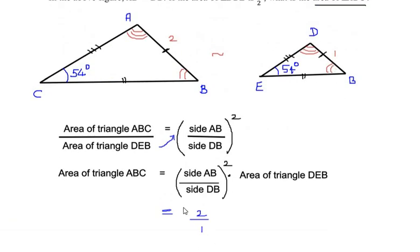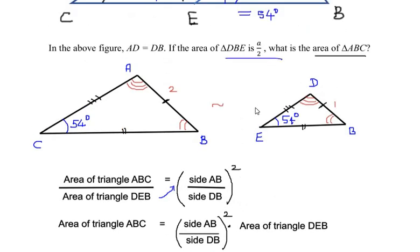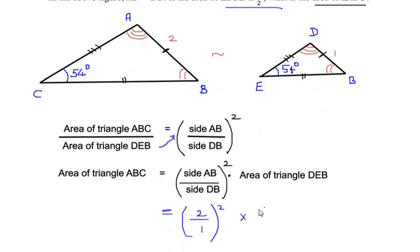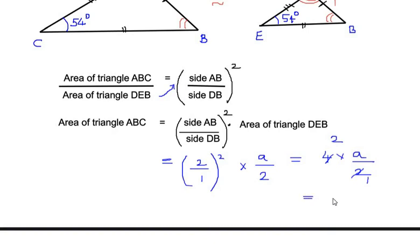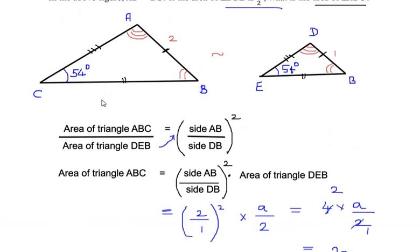So 2 over 1 to the power of 2 times area of triangle DEB, which was given as A over 2. Substituting A over 2, this simplifies as 2 squared is 4 times A over 2. Cancelling, we get the area of triangle ABC as 2 times A. So this is how we find out the area of triangle ABC.